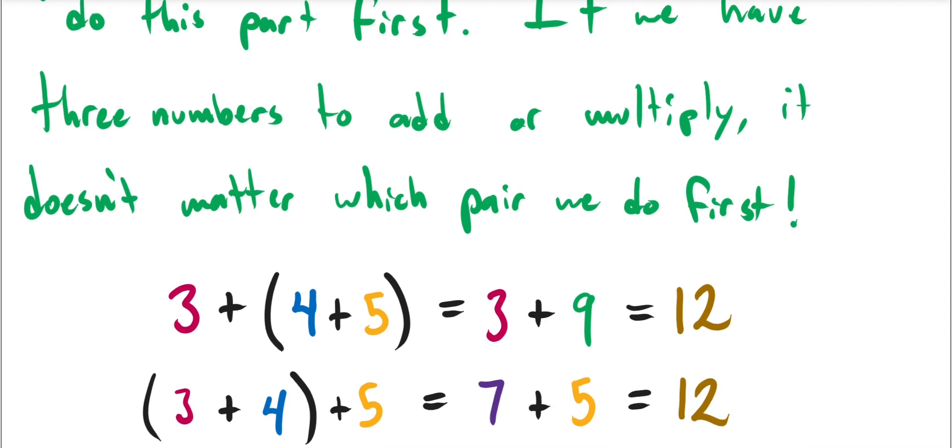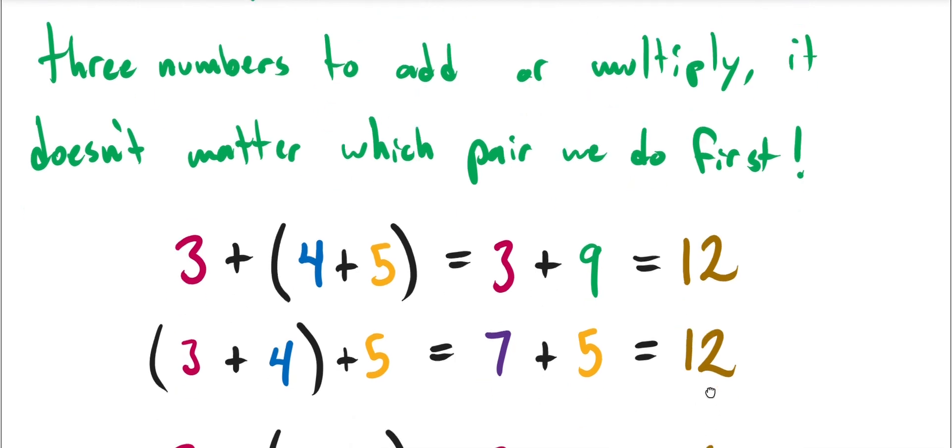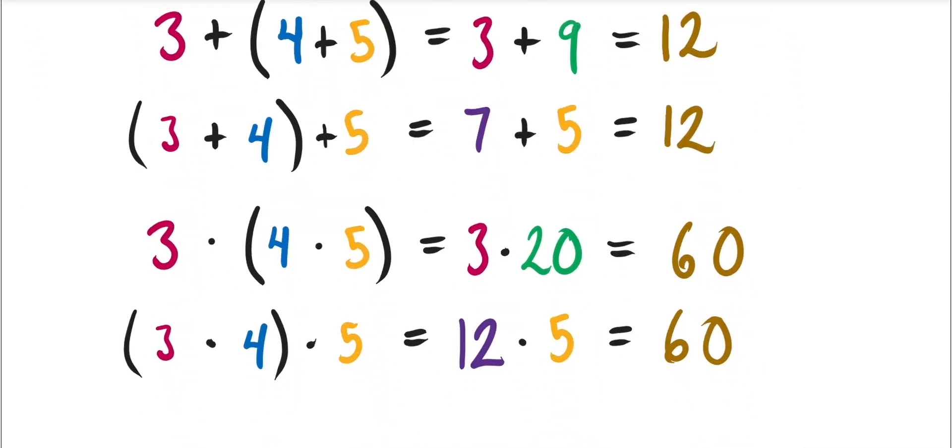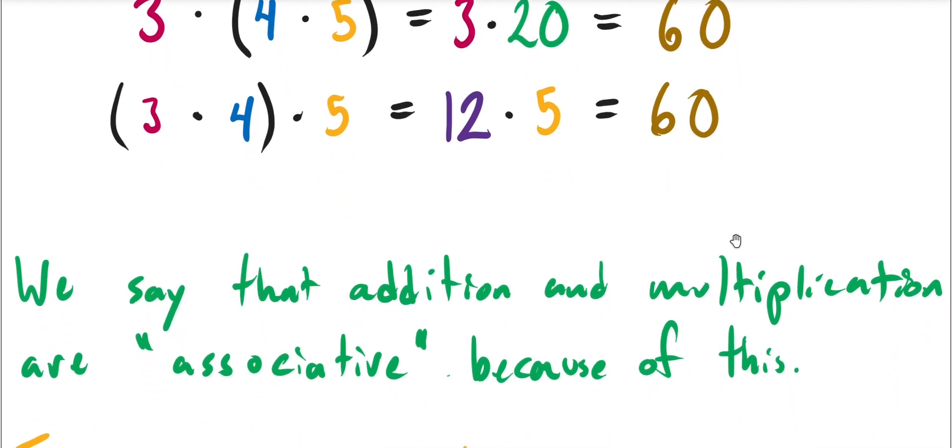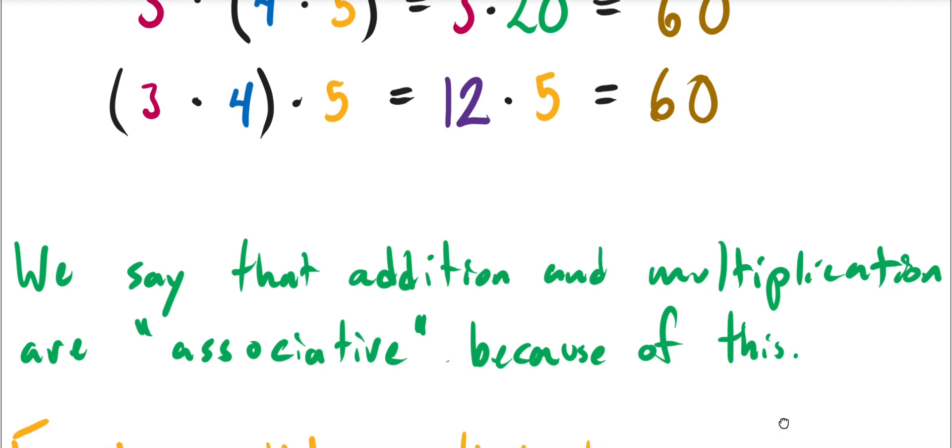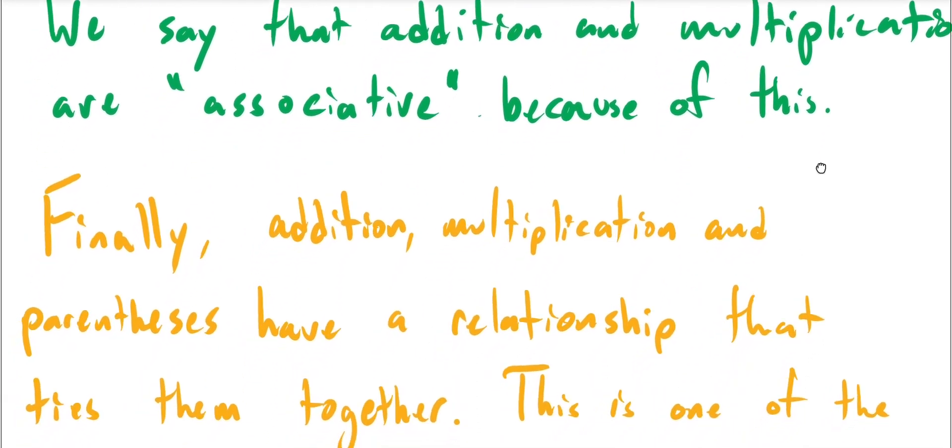They are associative because this sense of order doesn't matter. And multiplication goes the same way. If you look at three times four times five, you get three times 20, which is 60. Or if you do three times four times five, you still get 12 times five, which is still 60. Right, and so we call this associative or the associative property.